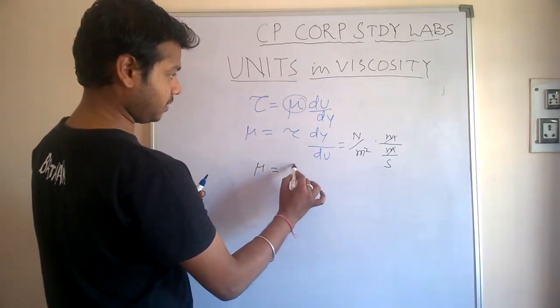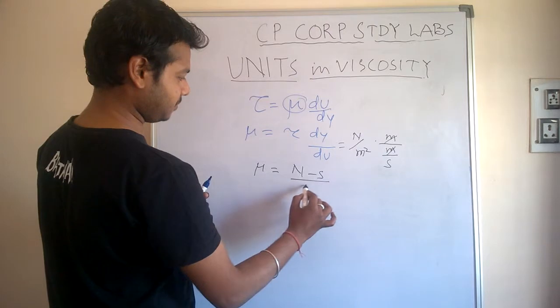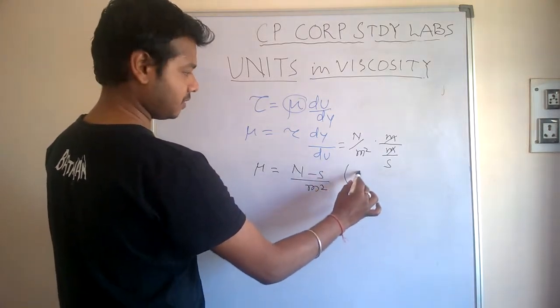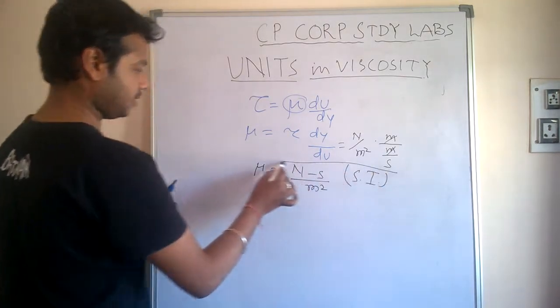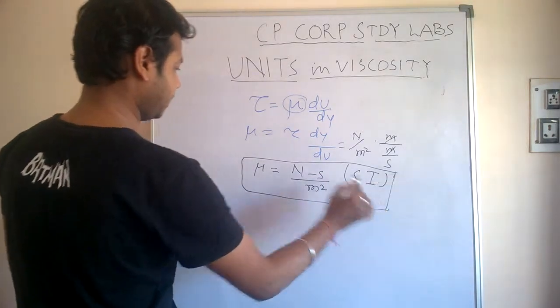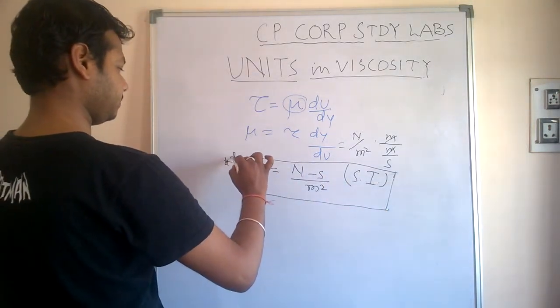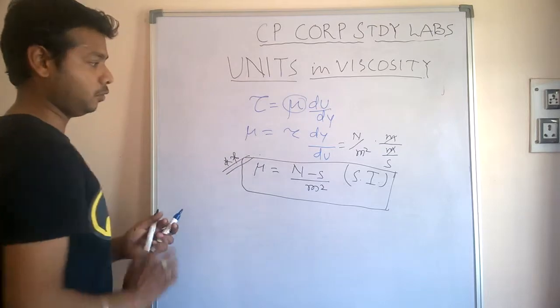μ unit is newton second per meter square in SI unit. Very important - the unit of viscosity is asked many times.